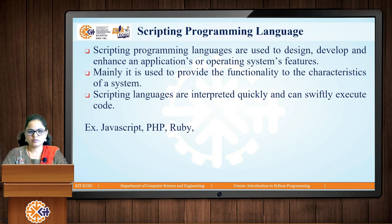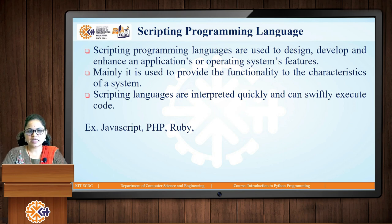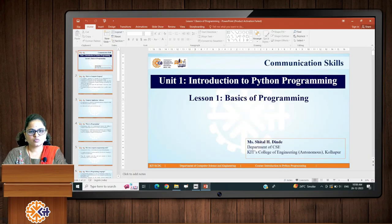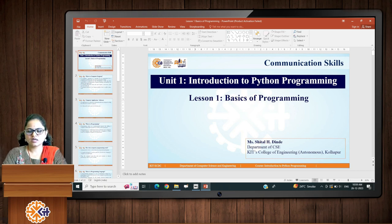Scripting languages are used to design, develop, and enhance applications — adding functionality to Java, C++ applications or operating system features. Most scripting languages are interpreted languages that quickly and swiftly execute code. JavaScript, PHP, and Ruby are scripting programming languages. With that, we end the basics of programming — these are the concepts we need to understand before learning any kind of programming language. Thank you.